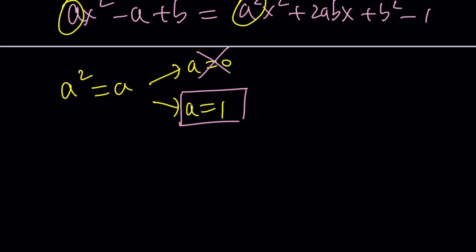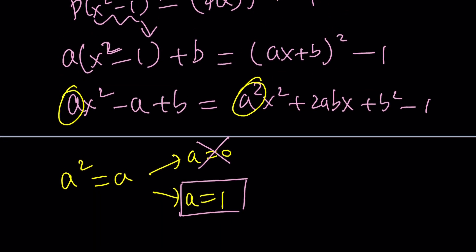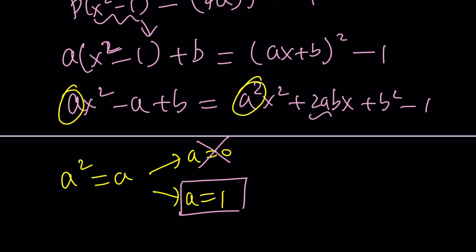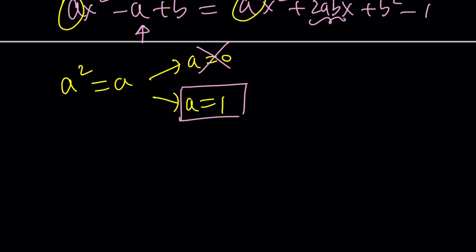How do we find out? By looking at the other pieces. For example, the coefficient of x is 2ab, but there's no x on the left hand side, which means 2ab must be 0. If 2ab is 0, that means a is 0 or b is 0. But we just said several times, it can't be 0. So b has to be 0.